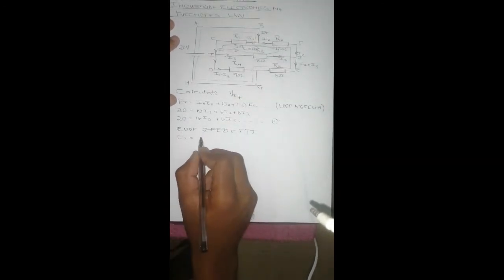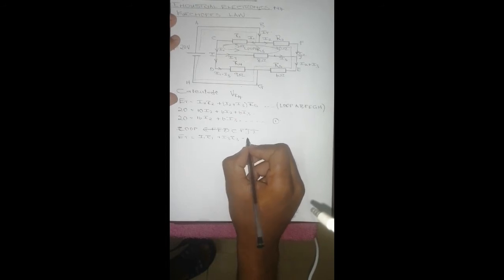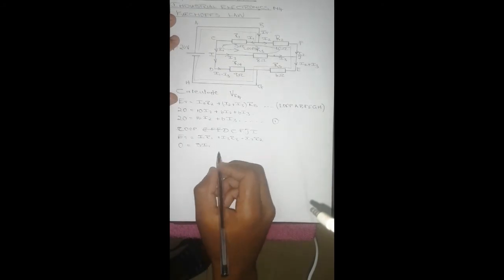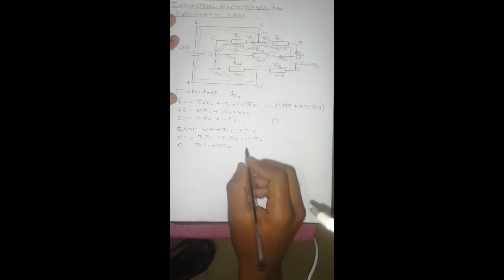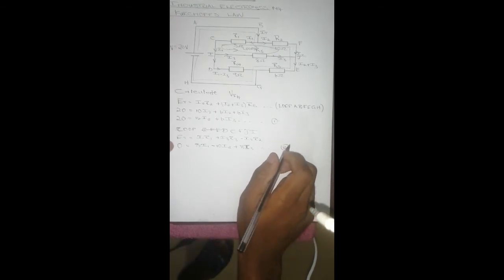For the second loop, which is going in this direction, we are going to have ET equals I1 R1 plus I3 R3 minus I2 R2, and this is going to be 0. Then R1 is 5, so 5 I1. Rearranging this, taking 2 before I3, it's going to be negative 10 I2, since R2 is 10, plus R3 is 8, so it's going to be 8 I3. This is loop two.